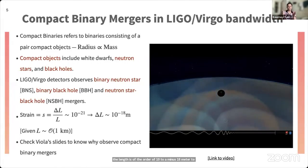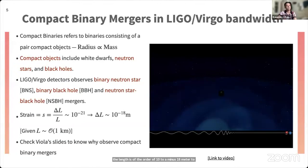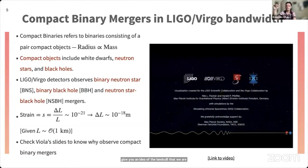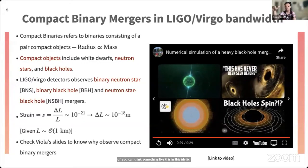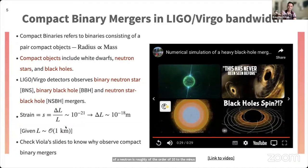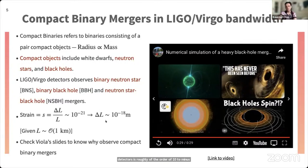To give an idea of this length scale: the size of an atom is roughly 10⁻¹⁰ meters (one angstrom), the size of a neutron is roughly 10⁻¹⁵ meters, whereas the length changes we are trying to measure with LIGO are roughly 10⁻¹⁸ meters — three orders of magnitude smaller than a neutron. If you're interested in the science case for these gravitational wave signals from compact binary mergers, please join tomorrow's session.